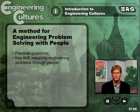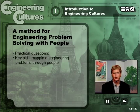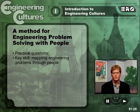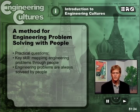The key skill you gain by participating in engineering cultures involves learning how to map engineering problems through people. In engineering, we learn how to solve narrowly defined technical problems. We learn how to draw boundaries around them, abstract them out, solve them in mathematical terms, and plug solutions back in. We call this the engineering method. But engineering problems never get solved by themselves.